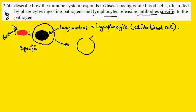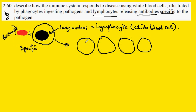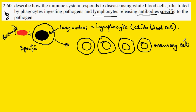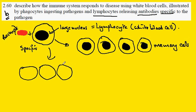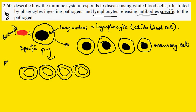One clone, with the large nucleus on the inside, are called memory cells. The other clone which is produced at the same time — also with a large nucleus, all genetically identical — these are called plasma cells.